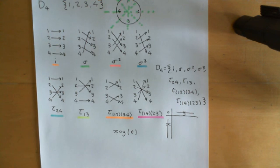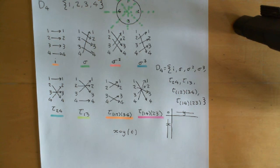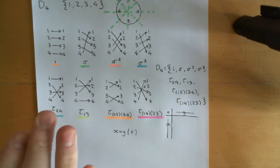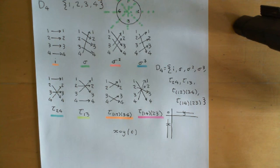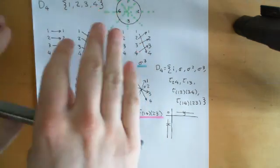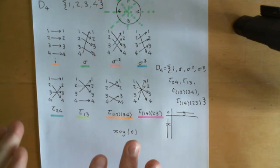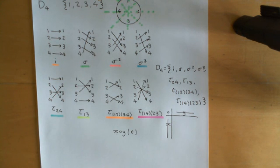That now concludes our discussion of dihedral groups. You'd now be able to continue on and look at the elements of D5, D6, and D7 if you wish. From D4 upwards, they are different from their symmetric groups and different from the cyclic groups — in fact they're in between: bigger than the cyclic group of the corresponding number of elements, and smaller than the symmetric group on the corresponding number of elements.